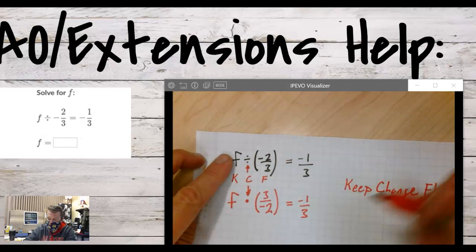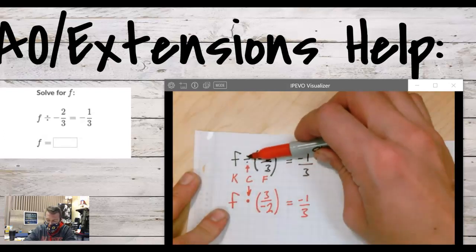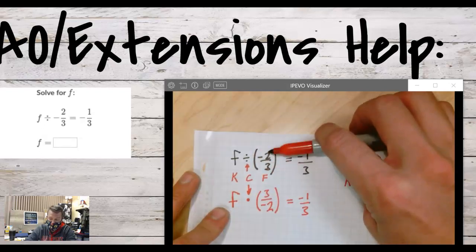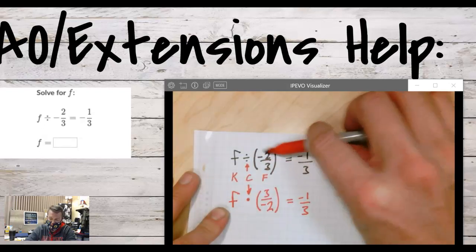Keep, change, flip says keep the first value, change division to multiplication - and this is just how we can change division to multiplication - and flip the number that comes after the division.